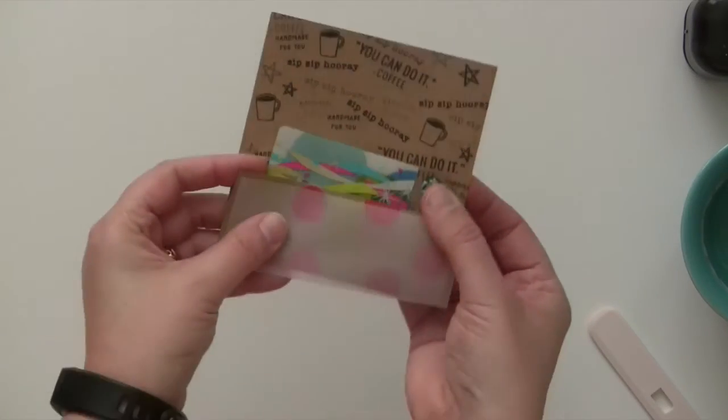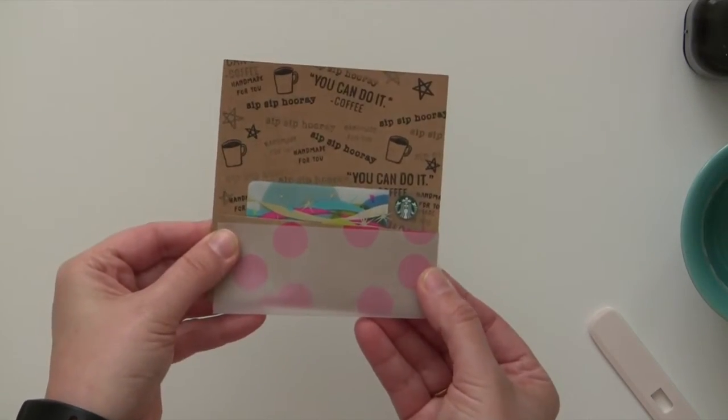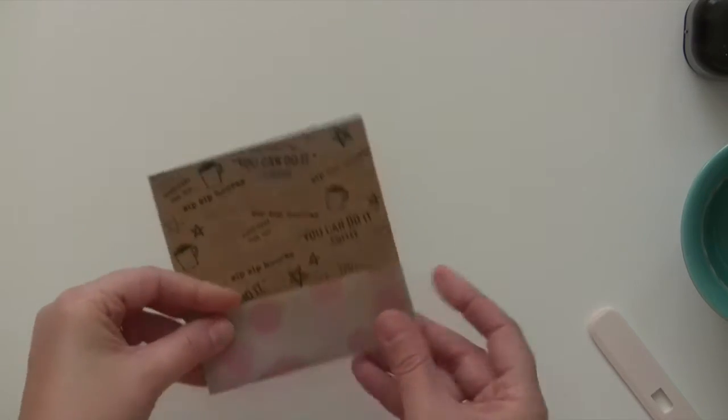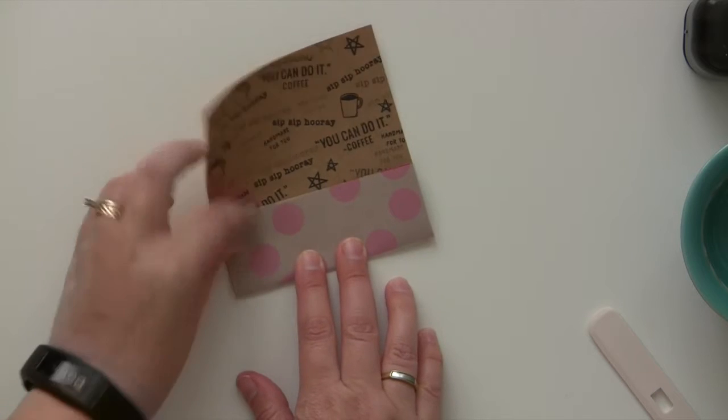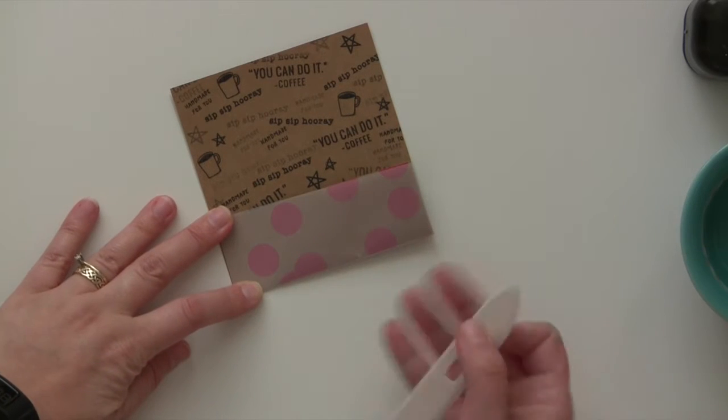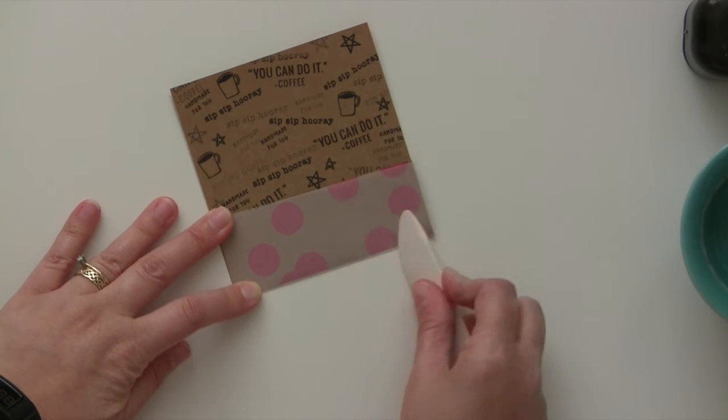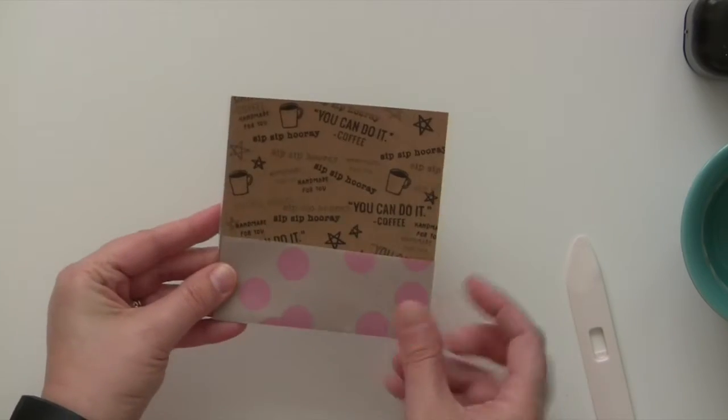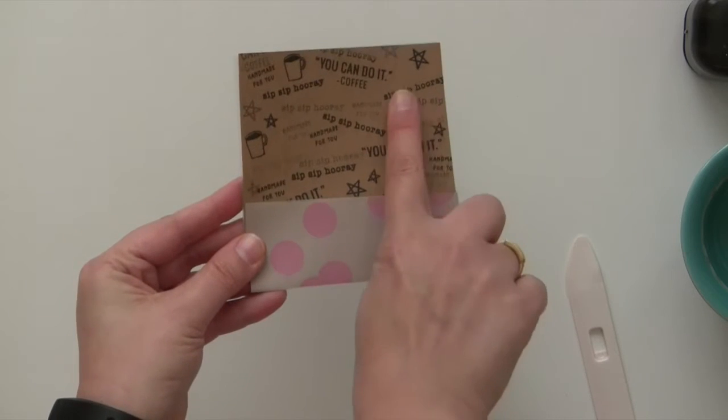Now it's on to putting together the gift card holder. I put the piece of vellum on top of the stamped piece and just folded it up from the bottom. Like I said, I didn't really measure this—I just winged it. I put the gift card in there and then scored it really well with the bone folder.